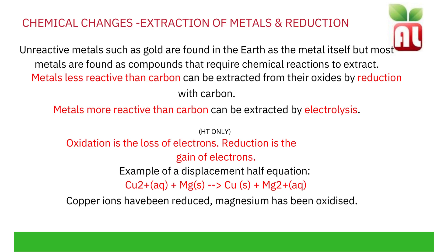Extraction of metals and reduction. Unreactive metals such as gold are found in the earth as the metal itself, but most metals are found as compounds that require chemical reactions to extract. Metals less reactive than carbon can be extracted from their oxides by reduction with carbon — remember, reduction is the process of removing oxygen. Metals more reactive than carbon can be extracted by electrolysis, using an electric current to separate the compound.